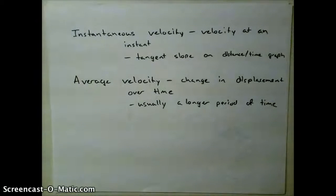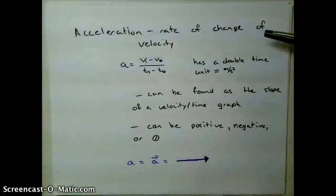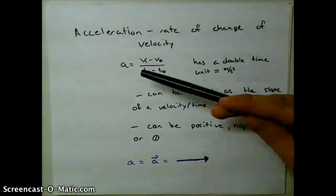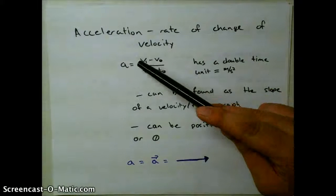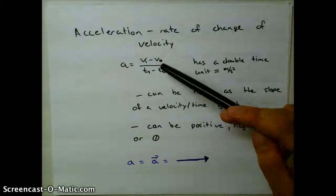So once we know what our velocity is, we can look at acceleration. Acceleration is just the change in velocity. So the acceleration would be velocity at time 1 minus time 0 divided by time at time 1 divided by time 0.